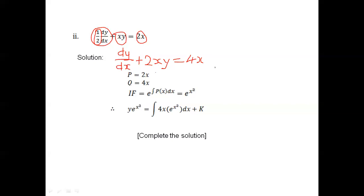From here it is easy to get the values of p, q, and the integrating factor. Comparing to the standard format, we realize that 2x is p and 4x is our q. To get the integrating factor, e raised to the power of the integral of p dx gives us e raised to the power x squared. You should work this out and confirm that it gives you e raised to the power x squared.